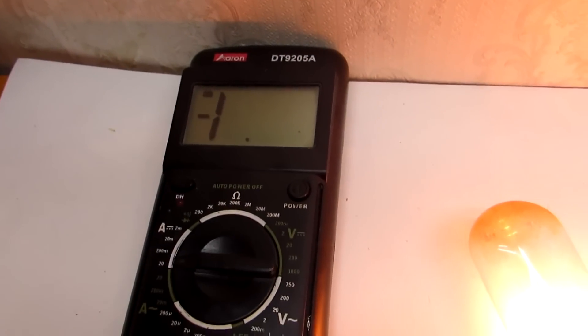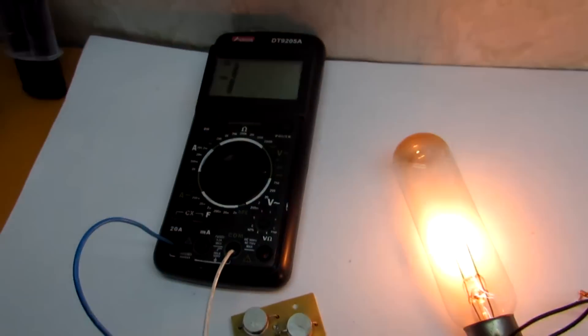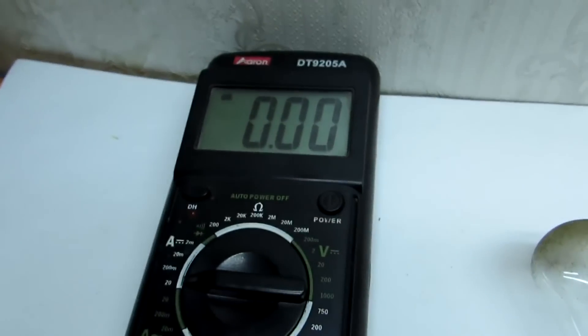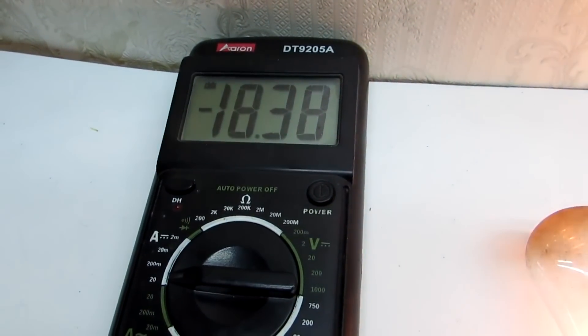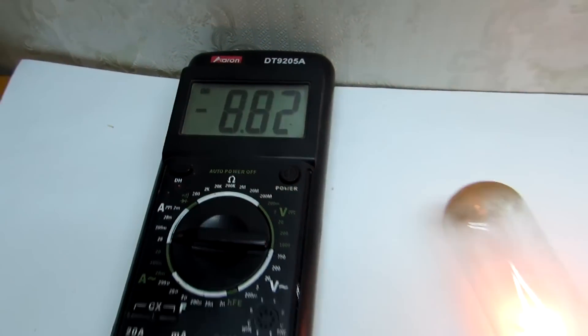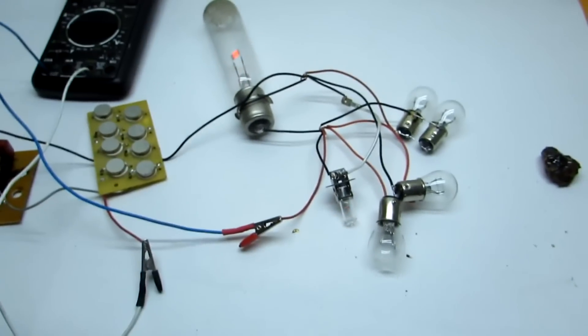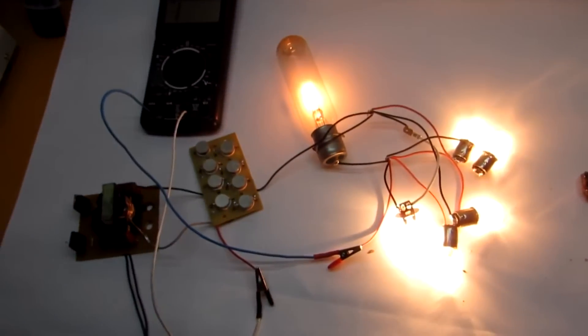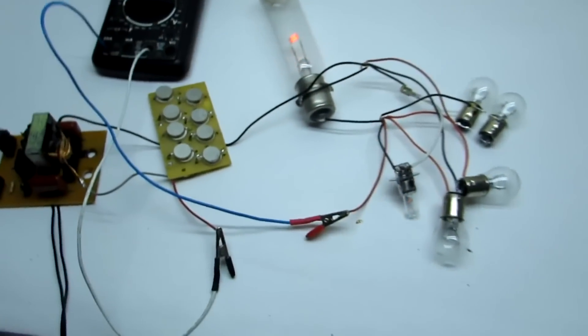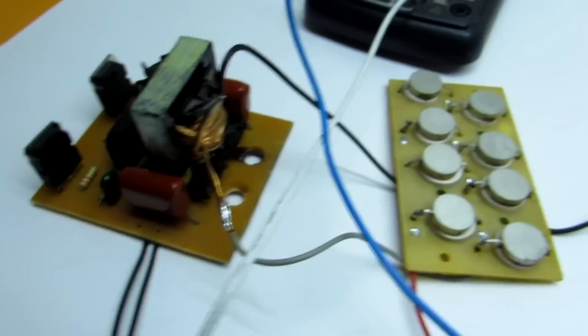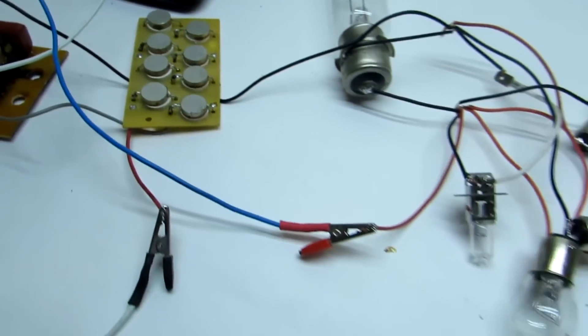First, let's measure the current. A multimeter 20 ampere scale almost goes off scale. I don't know for a long time because transistors and bridge without radiators.